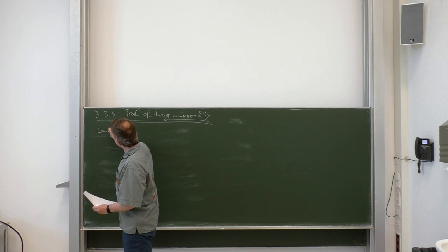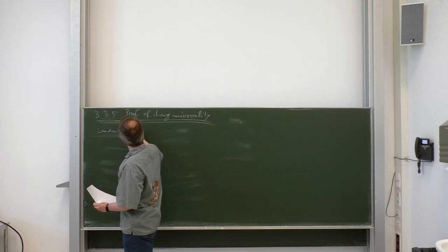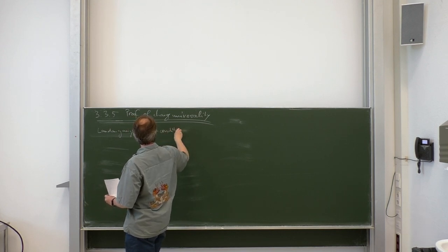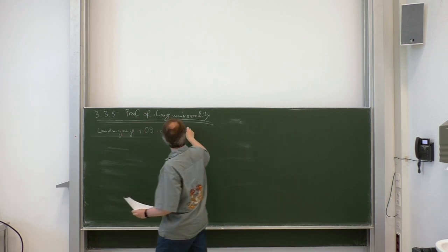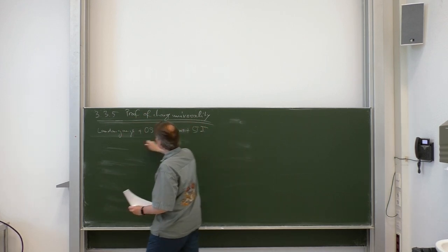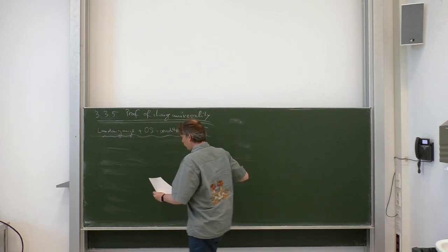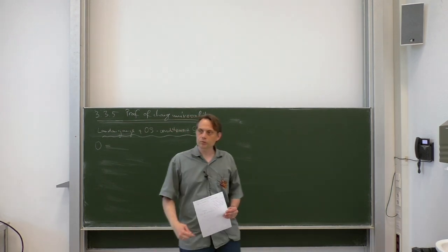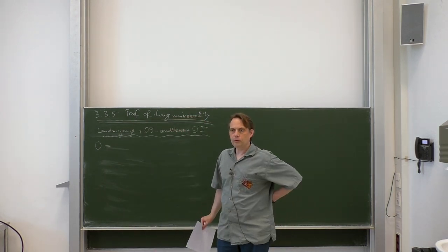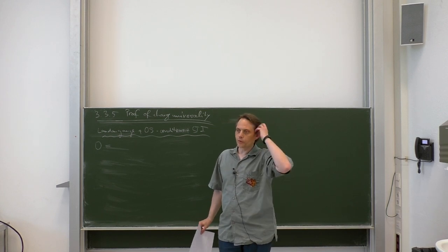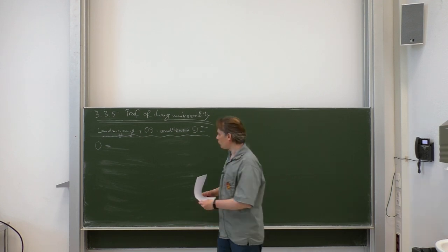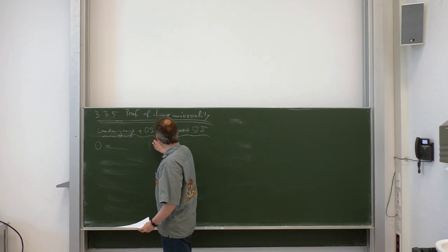Namely, we use Landau gauge plus the on-shell renormalization conditions, plus the Slavnov-Taylor identity. We directly start by writing down the appropriate Slavnov-Taylor identity which governs charge universality — this is really the analog of the Ward identity of QED. If you are experienced with Ward and Slavnov-Taylor identities, you will immediately see the similarity.